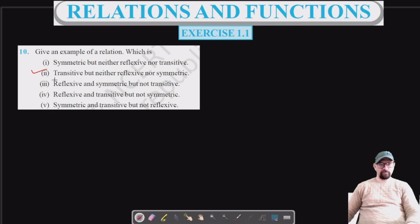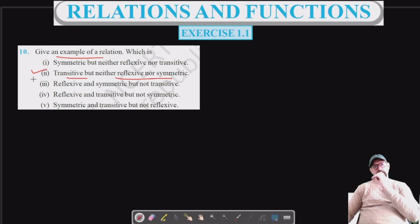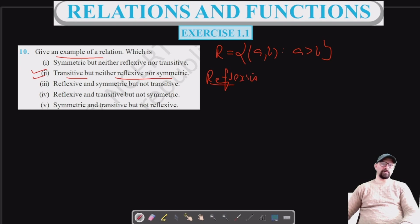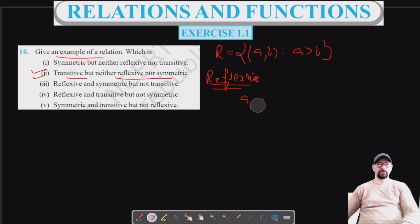For the second part, we have to show an example of a relation which is transitive but neither reflexive nor symmetric. The best approach is to take a relation using an inequality sign, so let's consider the ordered pair (a,b) where a is greater than b. It's not reflexive because a number or real number cannot be greater than itself.